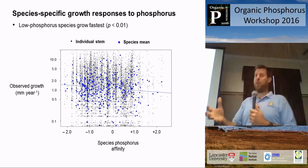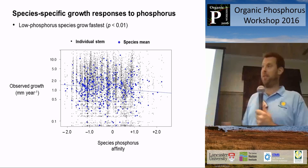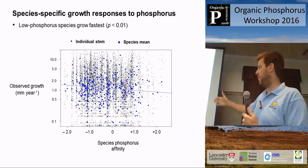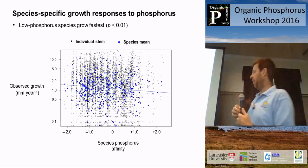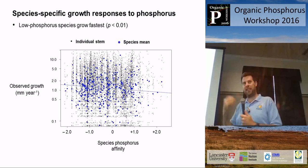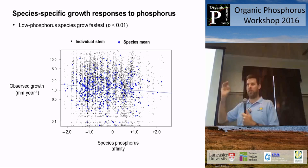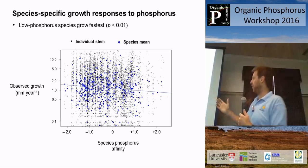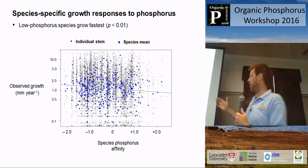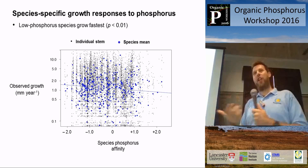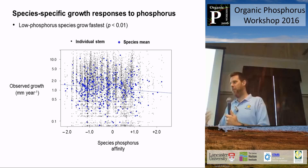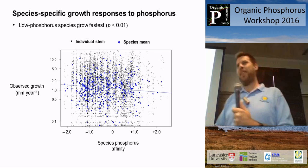One of the most remarkable things about trees strongly associated with low phosphorus is that they're growing, on average, the fastest of all the trees in the area. Plotting observed growth — measured by repeated census of the plots — against phosphorus affinity effect sizes, the fastest growth in these plots occurs on the lowest phosphorus soils. The fact that plants are investing in phosphorus acquisition from organic compounds is not constraining their growth; in fact, they're growing better on the lowest phosphorus sites.